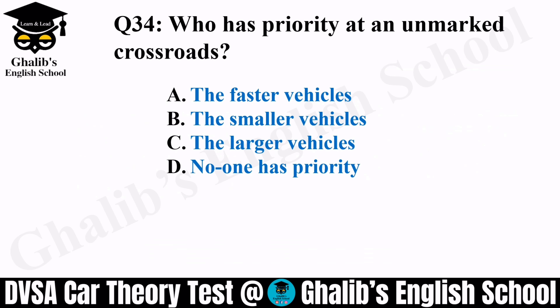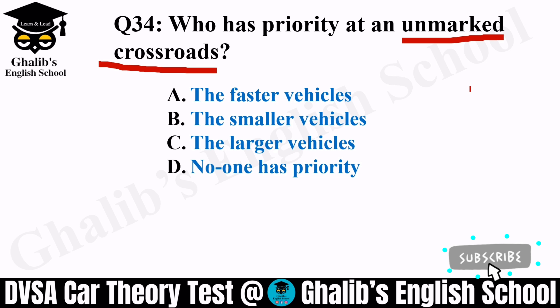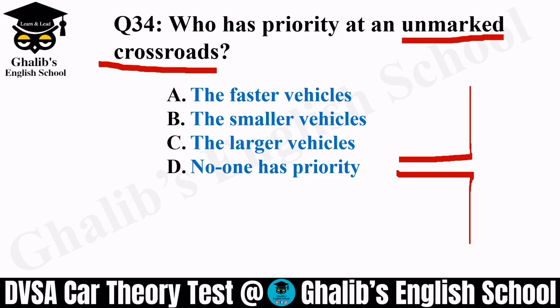Question 34. Who has priority at an unmarked crossroad? An unmarked crossroad has no markings on the ground or road surface. Options: the faster drivers, the smaller vehicles, the larger vehicles, or no one has priority. In this situation, no one has priority at an unmarked crossroad.